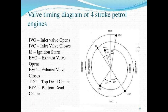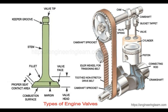The suction stroke is where the engine cycle starts. The inlet valve opens as the piston at TDC starts moving towards BDC, and the air-fuel mixture (for petrol) or fresh air (for diesel) enters the cylinder until the piston reaches BDC. In the compression stroke, the piston moves from BDC back to TDC, compressing the charge and raising pressure inside the cylinder. The inlet valve closes during this operation to seal the chamber for compression.